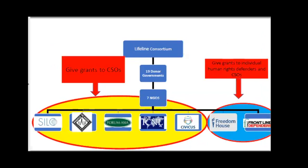The crisis response fund is part of the Lifeline Consortium, which is a consortium of seven NGOs funded by 19 donor governments. Five of the seven NGOs only give emergency grants to civil society organizations — they don't give individual grants. However, two of the organizations give grants to individuals, such as human rights defenders needing legal action or emergency assistance to leave their countries.